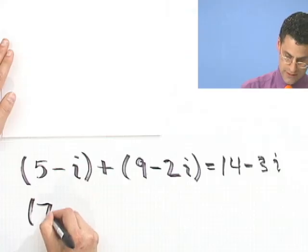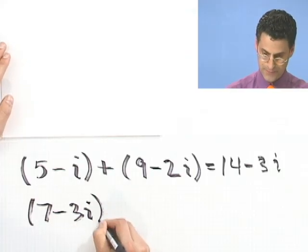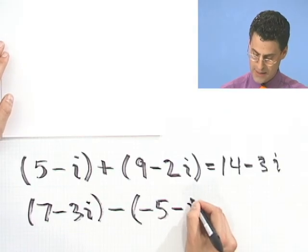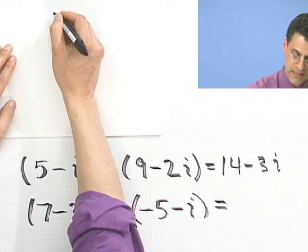How would you subtract them? Same exact way. Suppose I want to subtract 7 minus 3i, take that and subtract off minus 5 minus i. Well, you could line them up again.